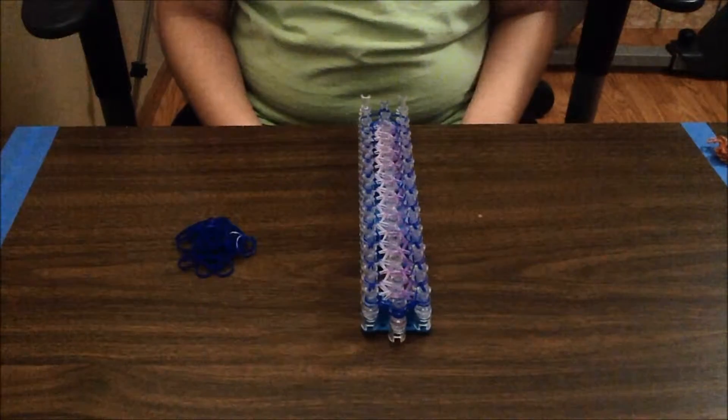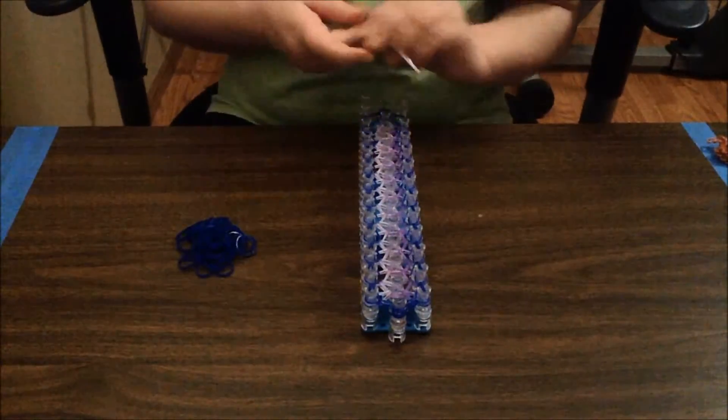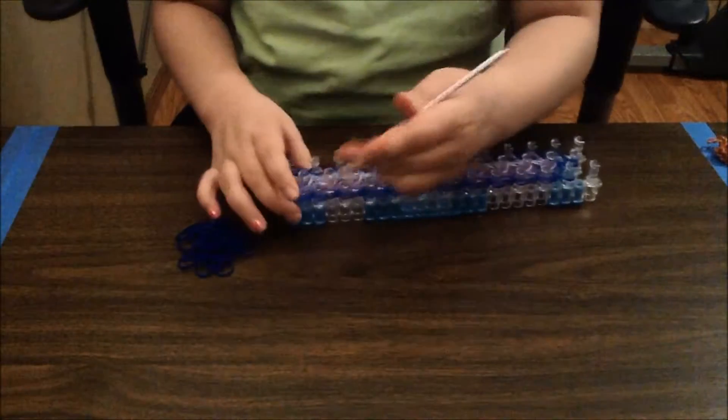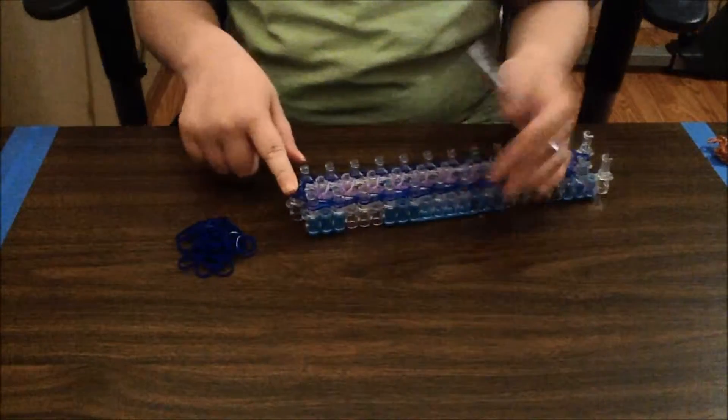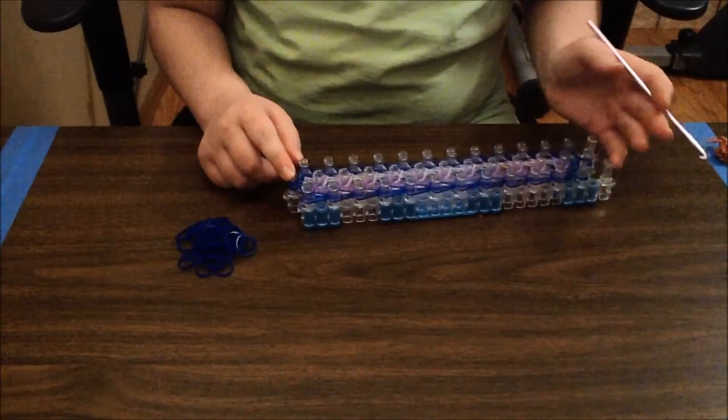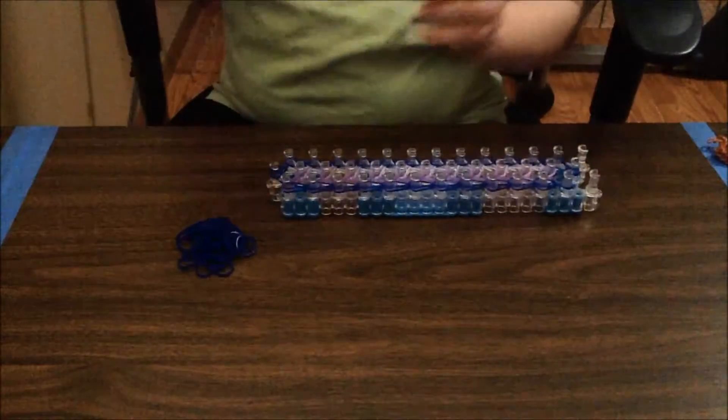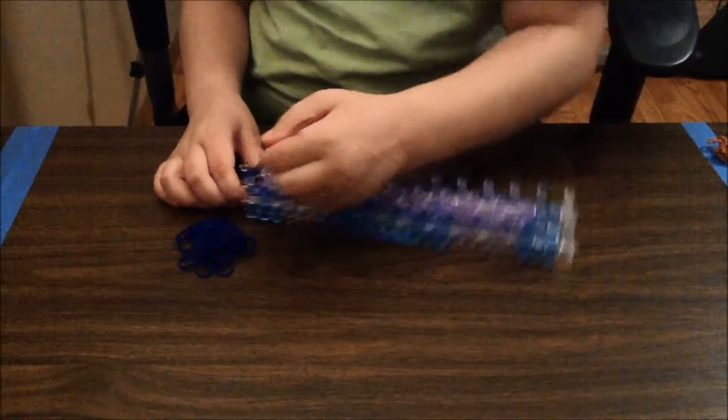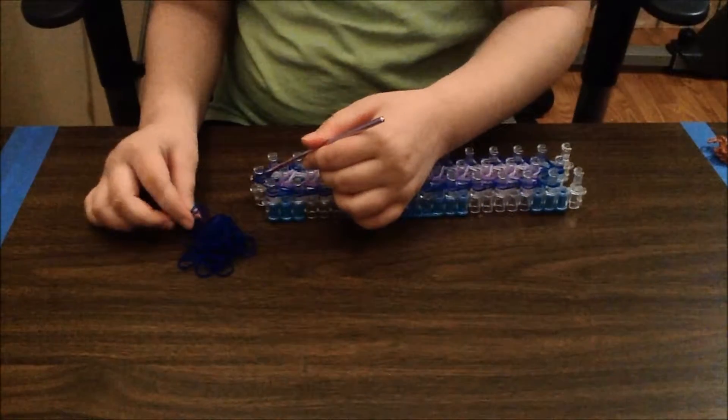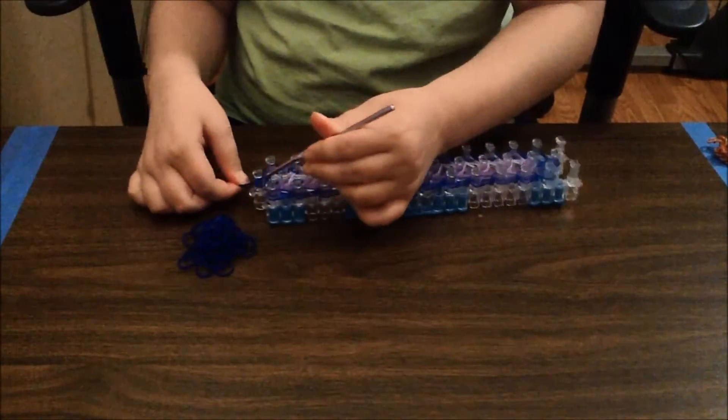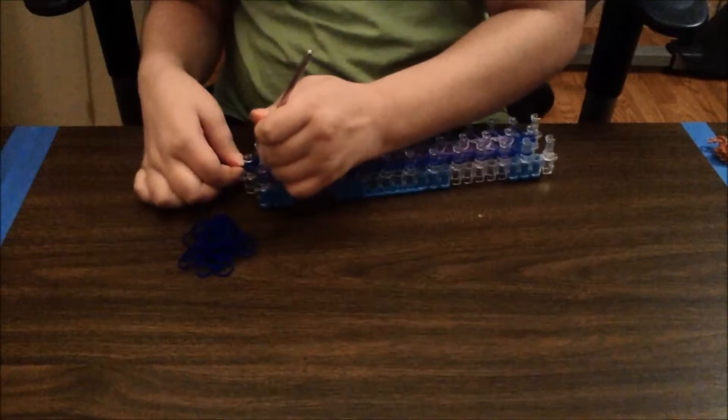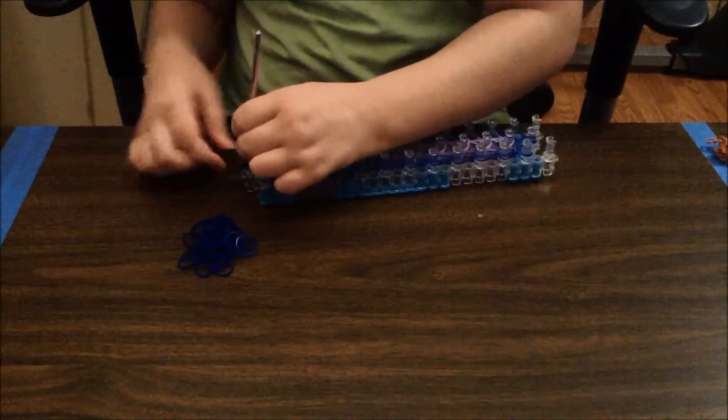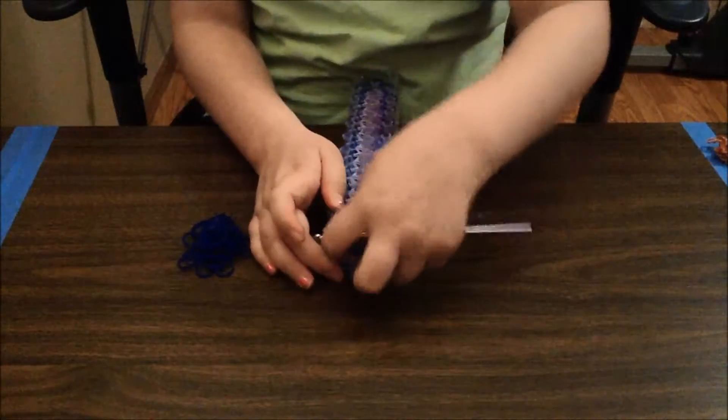Okay, so now you are going to want to take your hook and stick it in. Make sure that the arrows are pointing like to the side of you or something. And you're going to want to stick your hook in all those bands. Take one single band, put it on your hook and pull it up through all those bands. And then you can take your holiday bracelet off the loom.